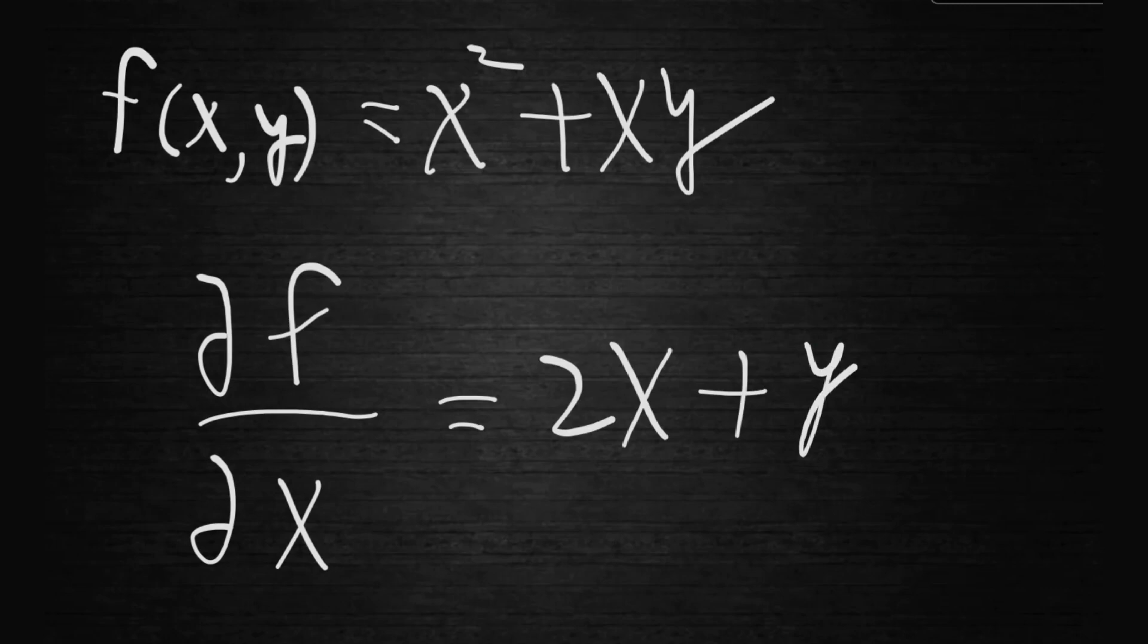Because x is treated as a constant, let's say 5x, the derivative of that would simply give you whatever the constant, whatever the coefficient is, in which case it's y in this case.